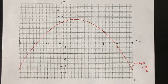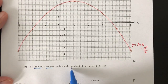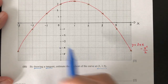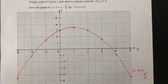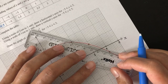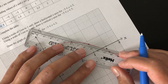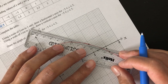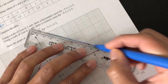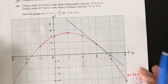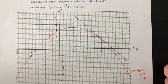Pretty easy so far. Now let's move on to the next question. By drawing a tangent, estimate the gradient of the curve at the point (3, 1.5). A tangent is a line that just touches this point in the direction of the curve. We have to draw a line that touches this point and continue this line on both sides of the point.